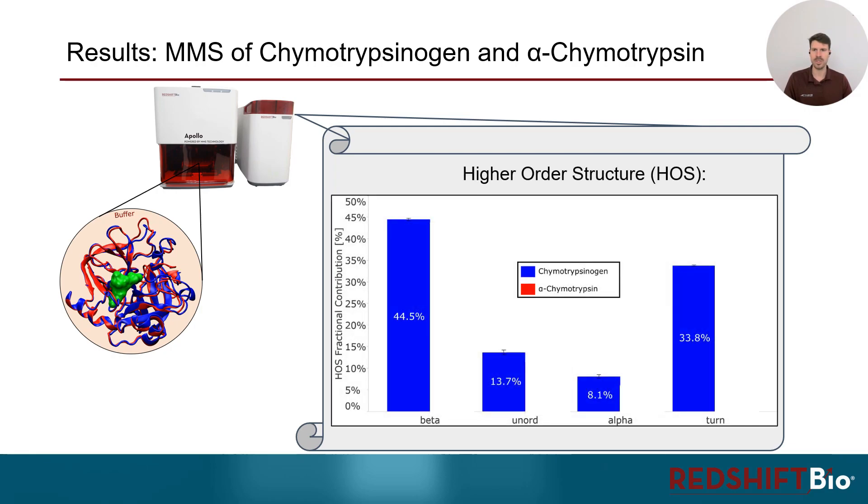For chymotrypsinogen, we find the highest abundance of beta sheet and turn structure, with lower contributions from unordered and helical structure.